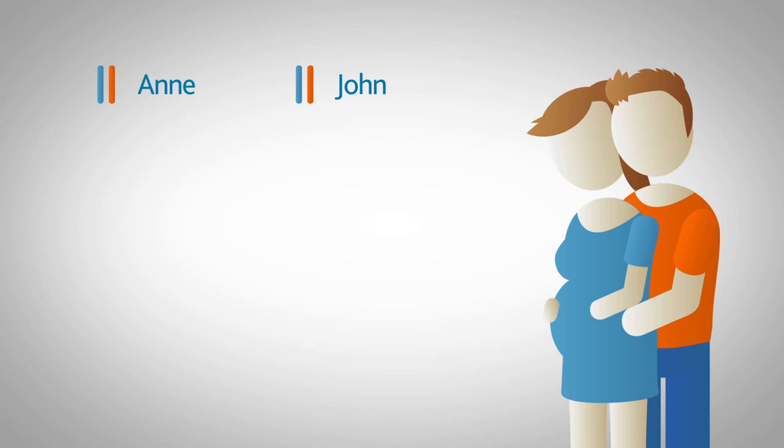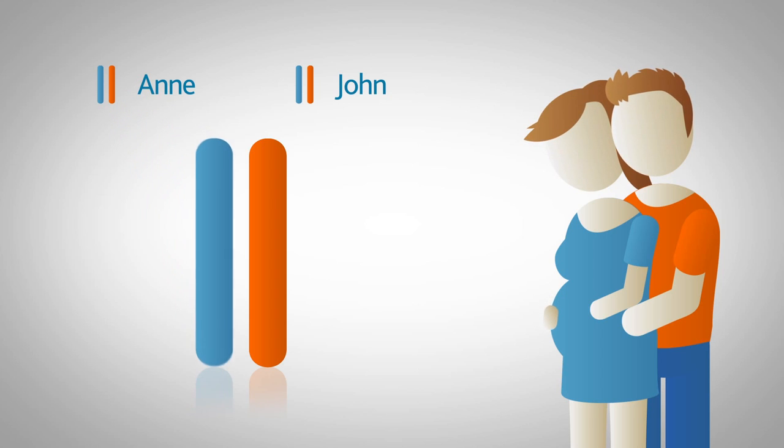The opposite could also happen, with John passing on the non-working gene and Anne the normal working copy, and again the baby would be healthy.